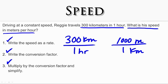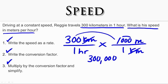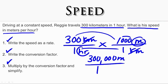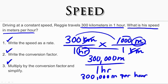Step three: multiply by the conversion factor and simplify. We can see that kilometers will cancel kilometers. Nothing else will cancel. Now we're ready to multiply. When you multiply by a power of 10, you multiply the 300 by 1, which is 300, and add on the three zeros, so it becomes 300,000. The unit is meters over 1 times 1, which is 1 hour. So this tells us that Reggie's speed in meters per hour is 300,000 meters per hour. This is how you convert speed.